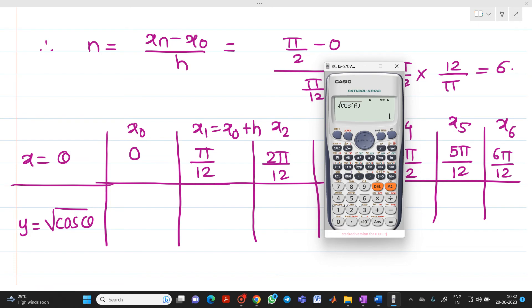Now put A equal to π divided by 12. So you will get answer as 0.98282 or 2815. Again, press CALC, put 2π divided by 12. So you will get answer as 0.93060.